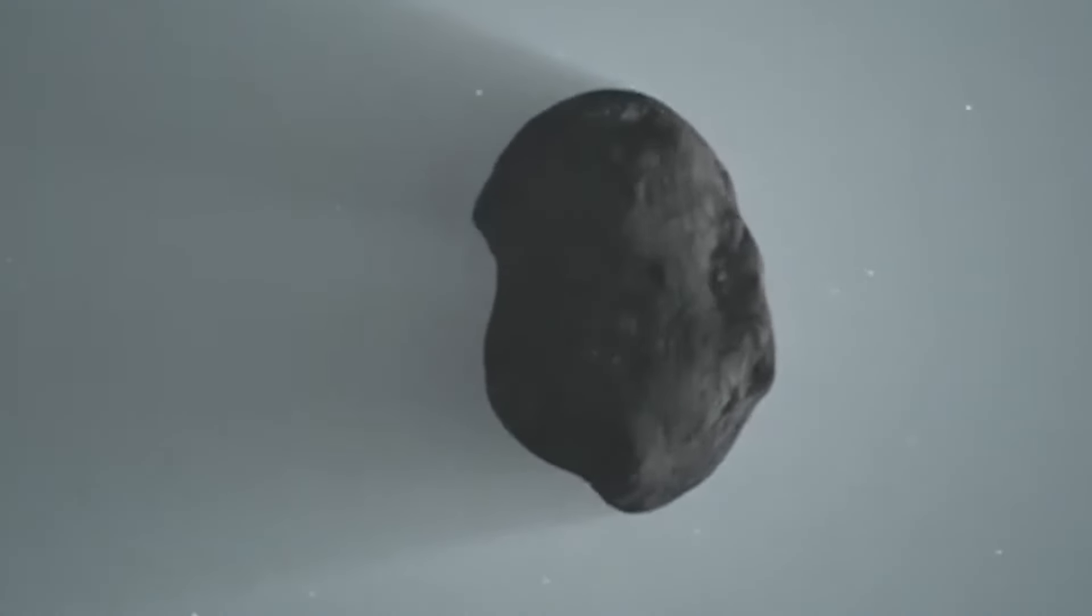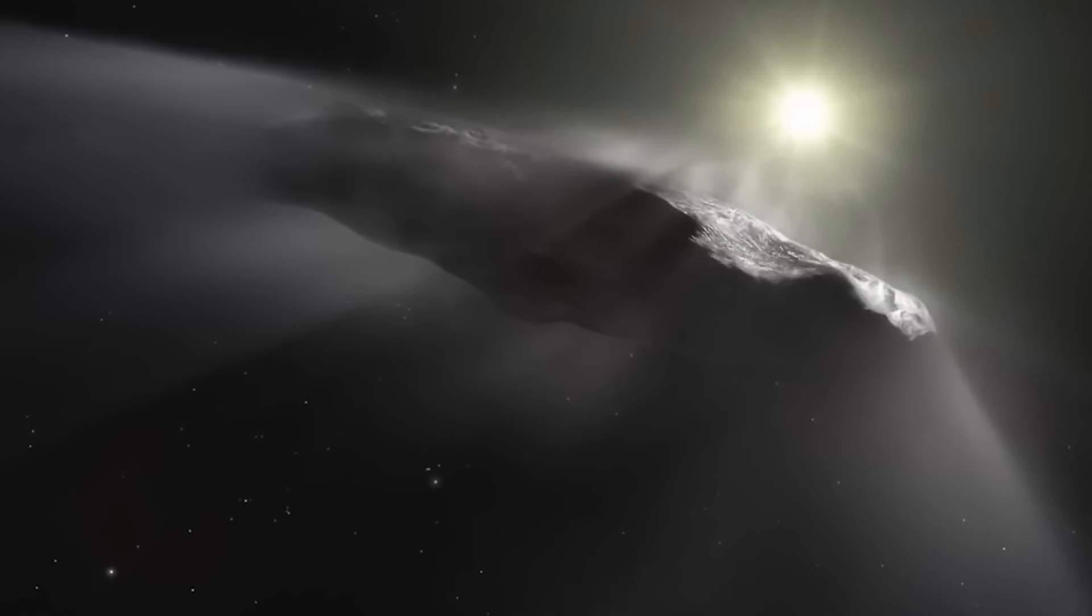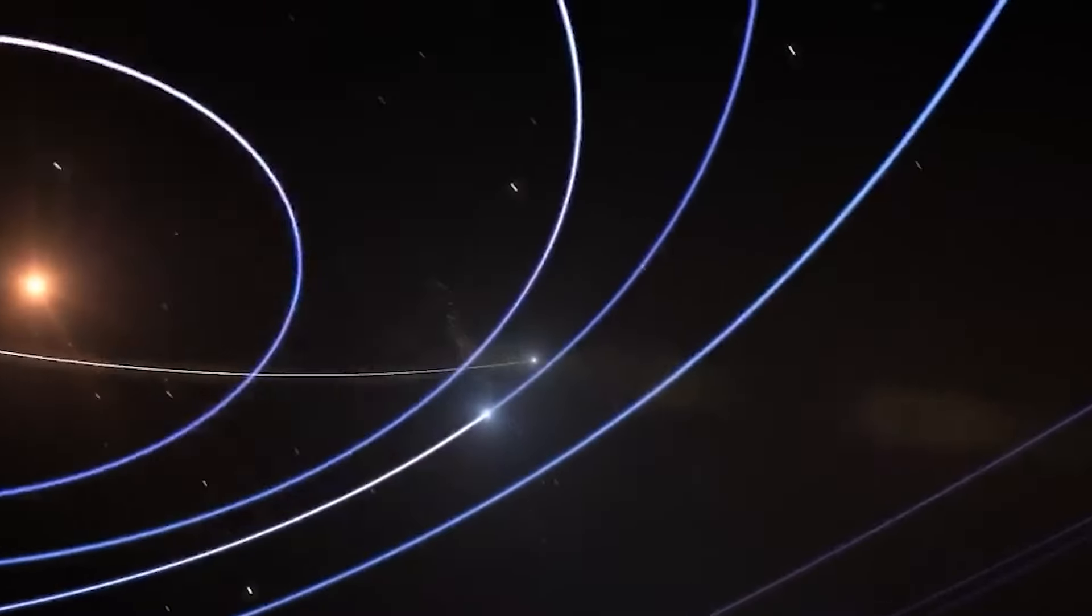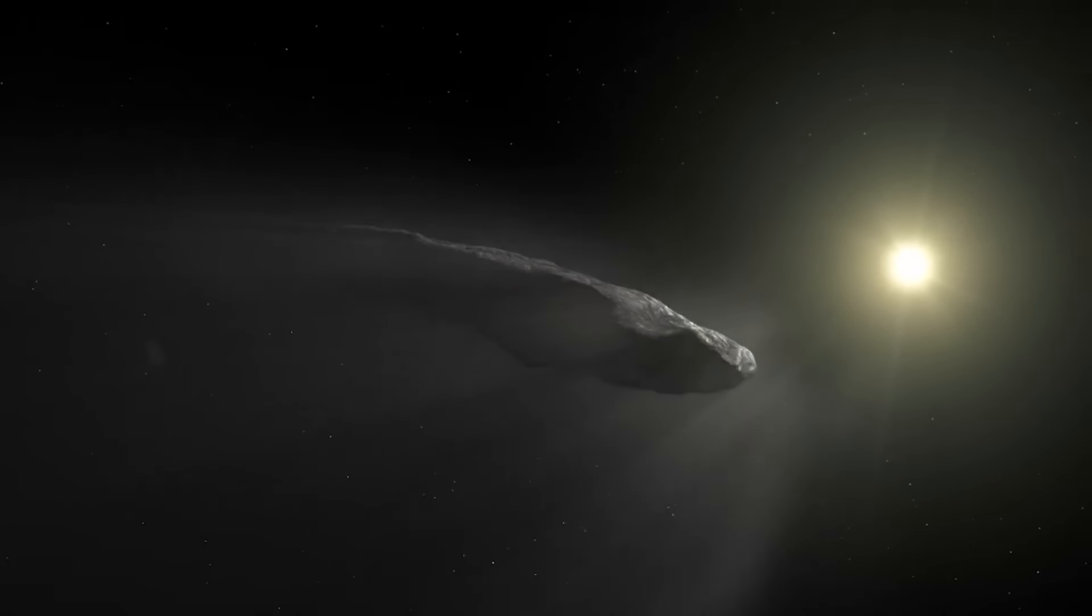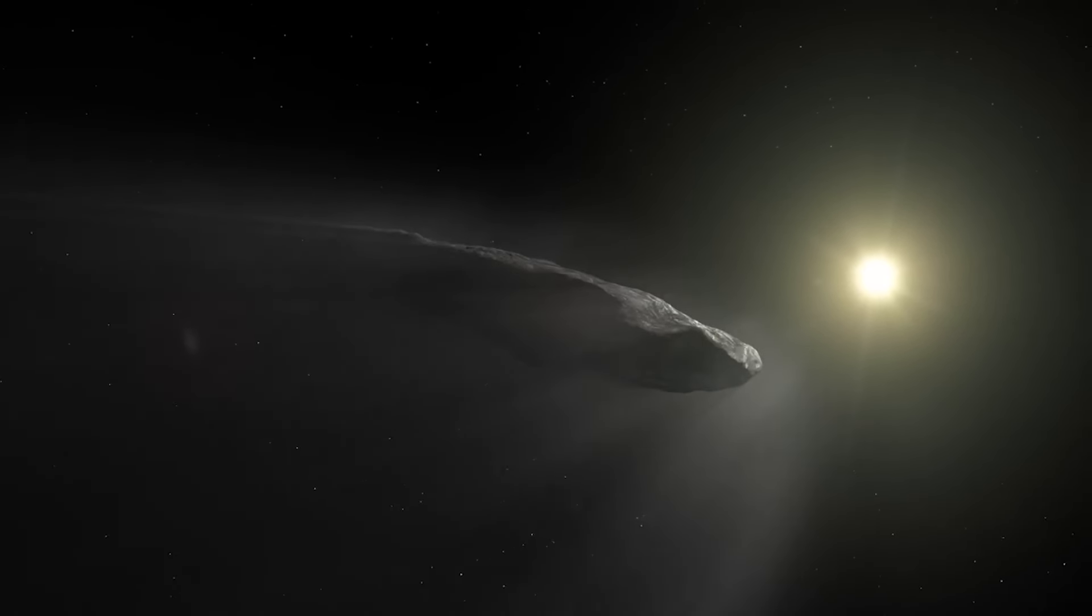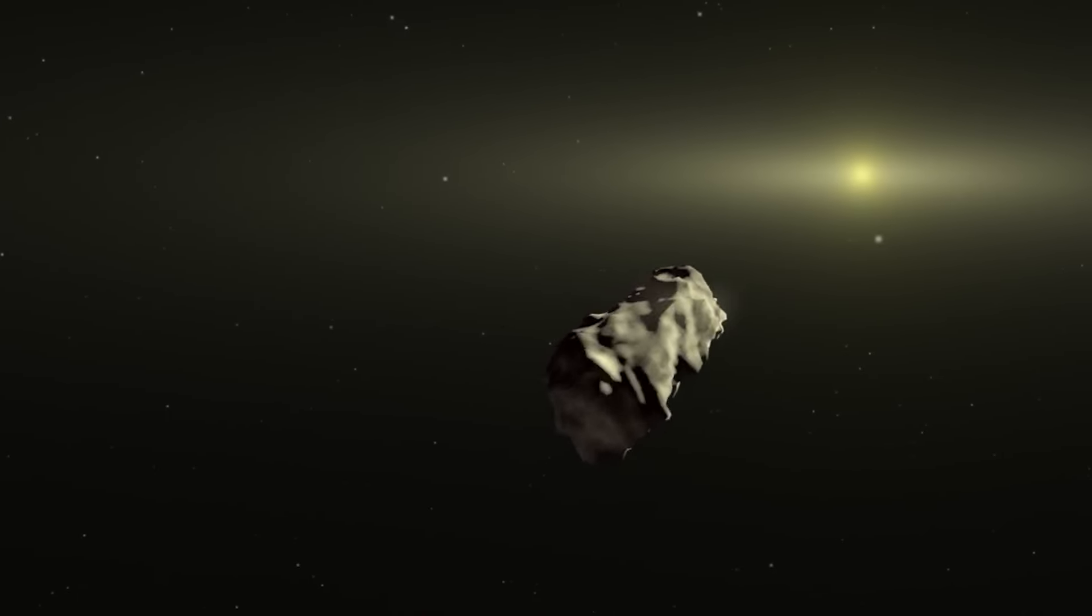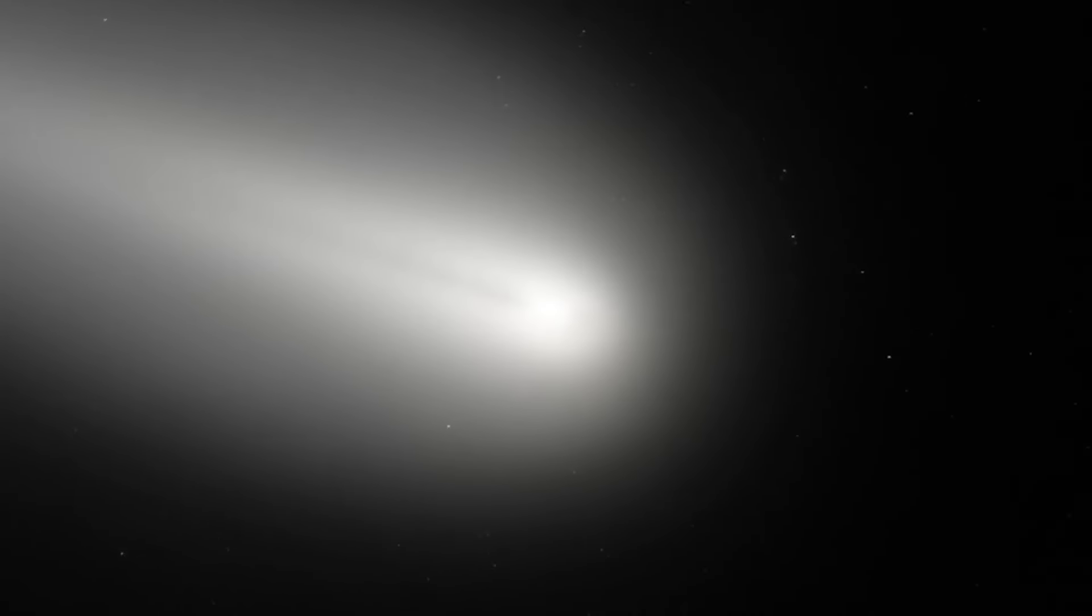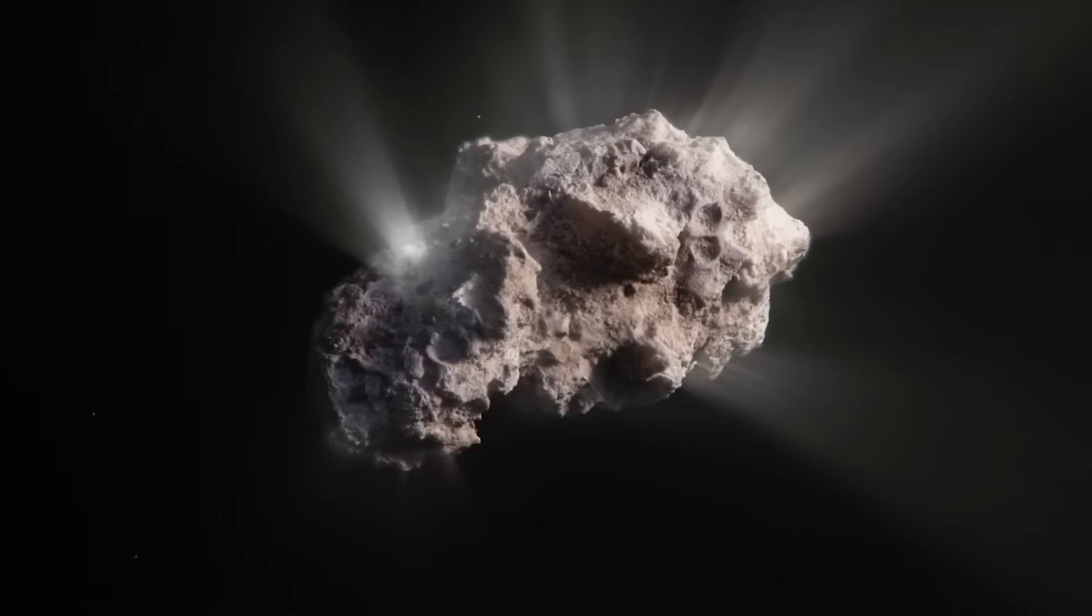Although this theory lacks hard evidence to support it, it has generated considerable interest and has prompted consideration of other alternatives for Oumuamua. Since no evidence has been found to strongly support this hypothesis, Oumuamua remains an enigma surrounded by conjecture. Among the remaining possibilities is the likelihood that it is either a fragment from a colliding planet or a torn fragment of a comet that was affected by solar gravity.